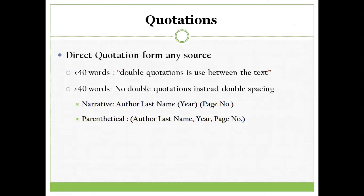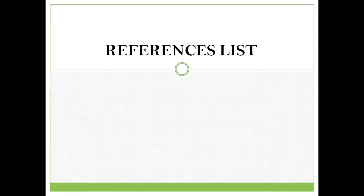Sometimes you also need to use a quotation from any source. If you quote anything from any other source and it is less than 40 words, you are going to use double quotation marks within the text. But if the quotation is more than 40 words, you do not use double quotation marks — instead, you provide double spacing between the text. In the case of narrative citation of a quotation, include the author's last name, the year within parenthesis, and the page number within parenthesis. For parenthetical citation, the author's last name is separated by a comma from the year, and then from the page number — and all of this is within parenthesis.